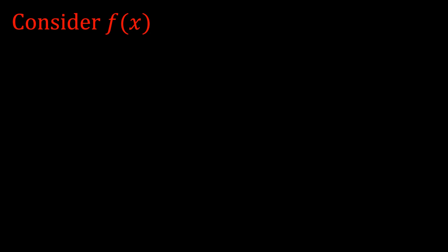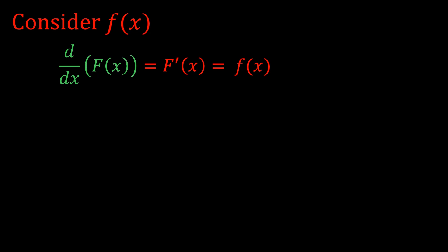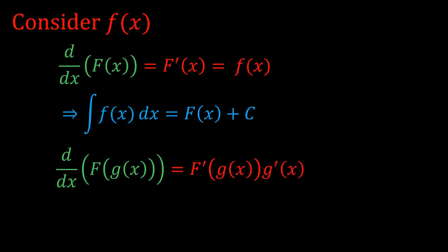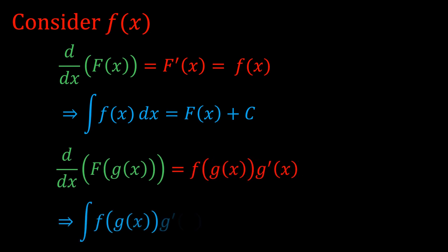Consider a function f. Let's say that you know an antiderivative of this function — we're going to call it capital F. That just means that the derivative of capital F is lowercase f, and also that the integral of f is capital F. Now let's see what happens when you differentiate capital F of g. By the chain rule, you get capital F' times g'. But remember, capital F' is equal to f, so we can replace capital F' with f in this formula.